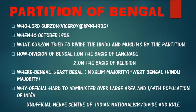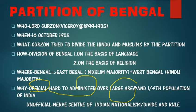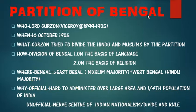Why did this partition of Bengal take place? The official reason given by British officials was that it was hard to administer such a large area, as one-fourth of the whole population of India was in Bengal only. They claimed they were unable to administer Bengal effectively, and that is why they introduced this partition. That was the official reason.